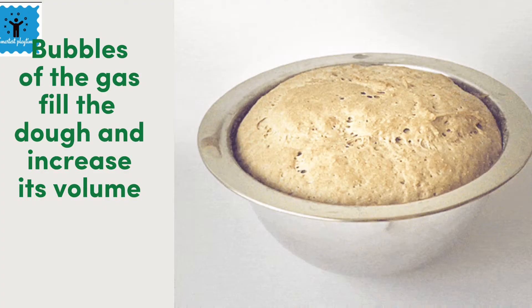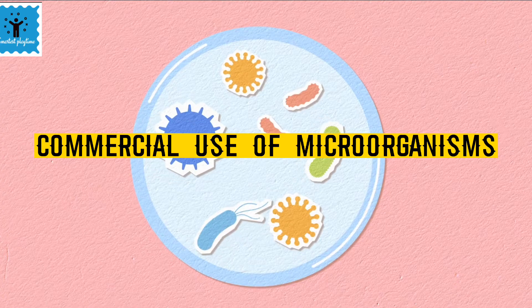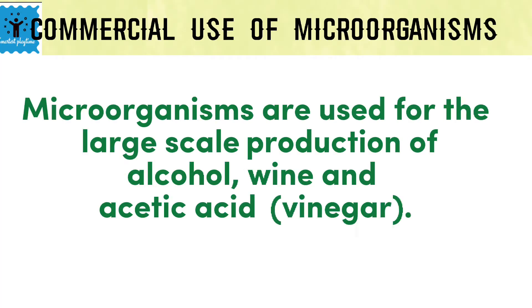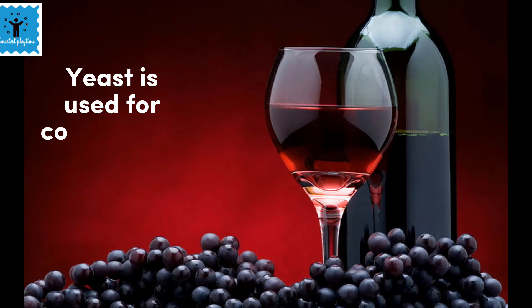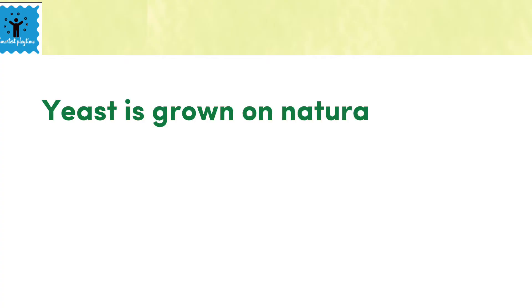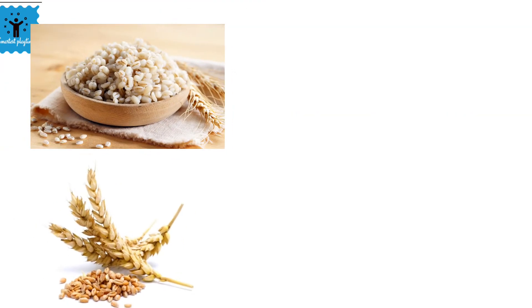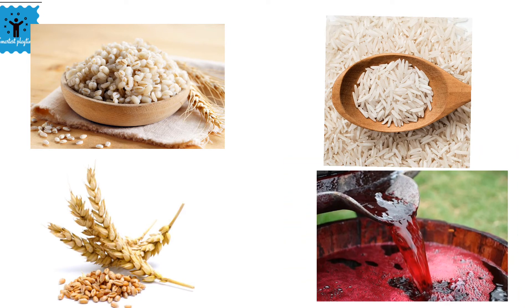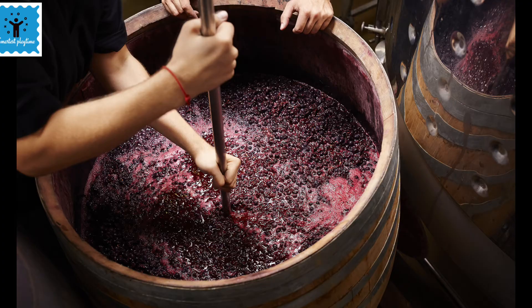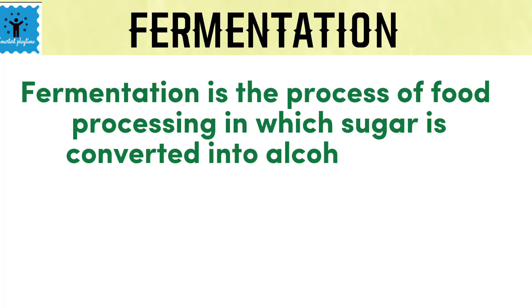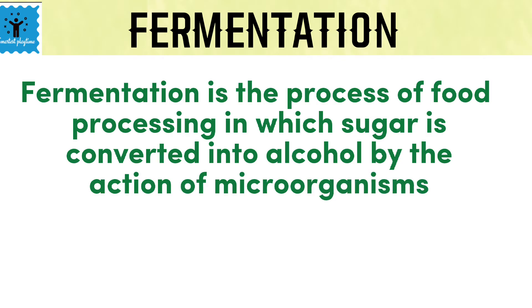Microorganisms are also used for commercial purposes — for the large-scale production of alcohol, wine, and acetic acid, also called vinegar. Yeast is grown on natural sugar, which is present in grains like barley, wheat, rice, or crushed fruit juices. When yeast is added to these natural sugars, after some time it converts them into alcohol. This process of conversion of sugar into alcohol is known as fermentation.